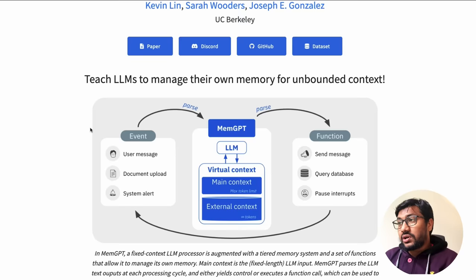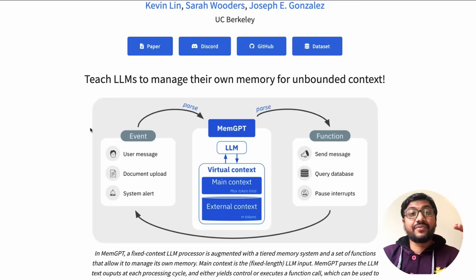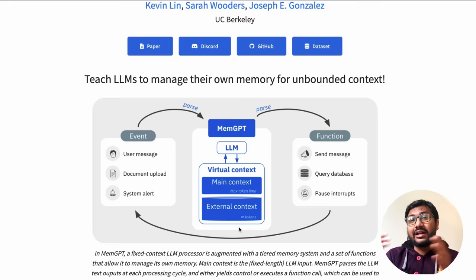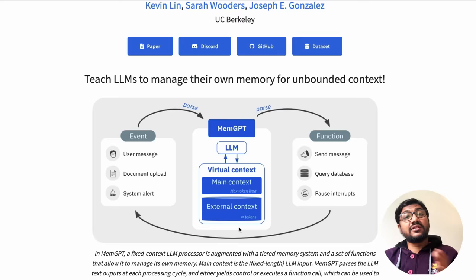What MemGPT tries to do is design an architecture where LLMs can manage their memory across different tiers. The LLM now has a virtual context. Typically, every LLM has a context window — a limit like 4,000 tokens, 8,000 tokens, or 2,000 tokens. That's the in-context memory. The LLM only knows what's within that context. Anything beyond it — including conversation history that exceeds the limit — is lost. That's where retrieval-augmented generation and vector databases come in.